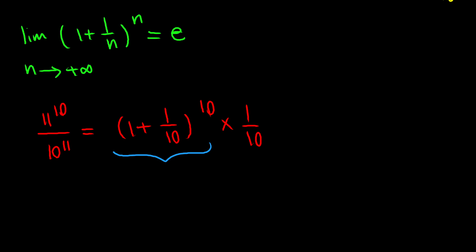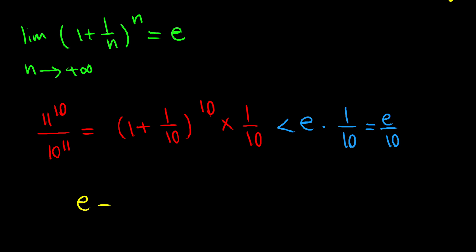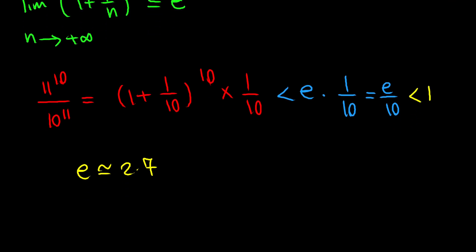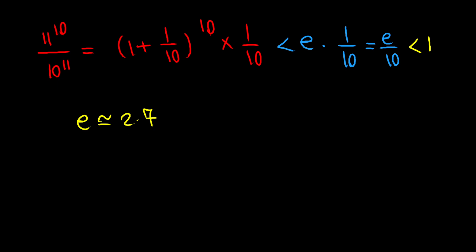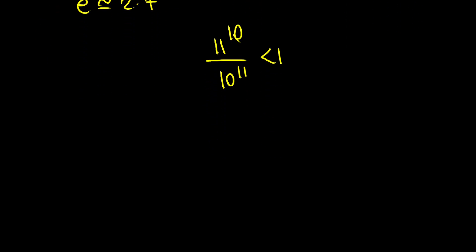So I can say that the whole thing is less than e times 1 over 10, which equals e divided by 10. Now notice that e is approximately 2.7, therefore e divided by 10 is a number less than 1. So the ratio 11 to the power of 10 divided by 10 to the power of 11 is less than 1. Therefore, 11 to the power of 10 is less than 10 to the power of 11, so 10 to the power of 11 is the greater one. We are done with the first method.